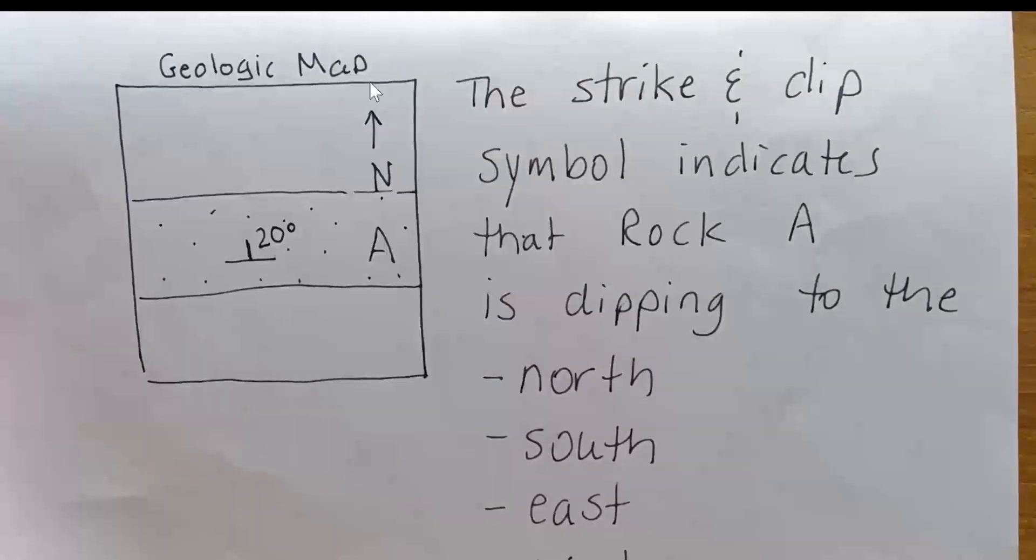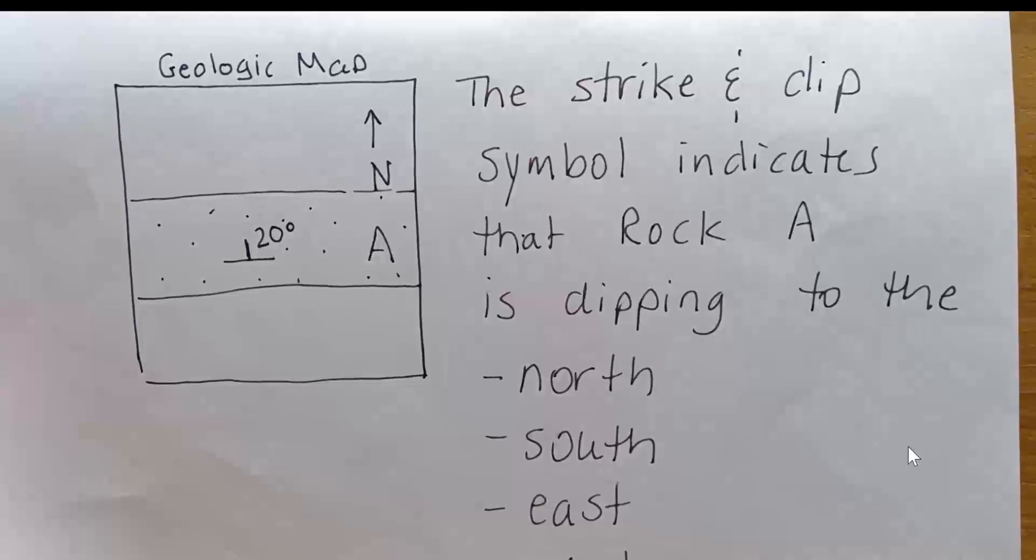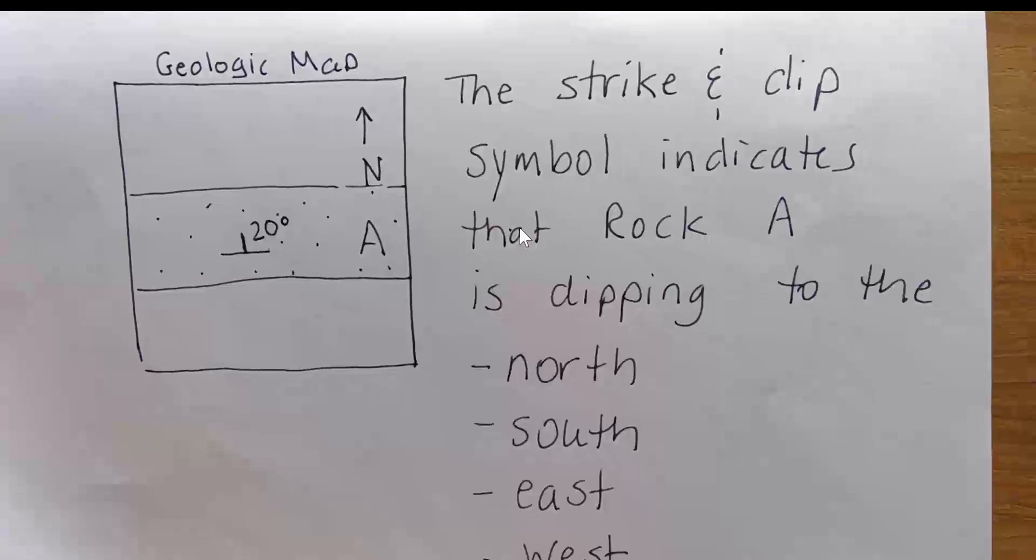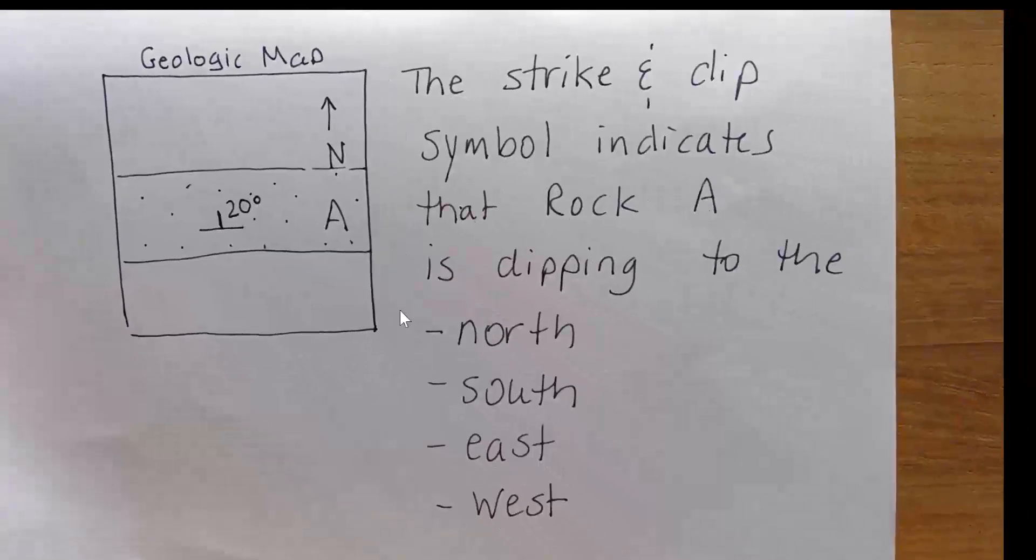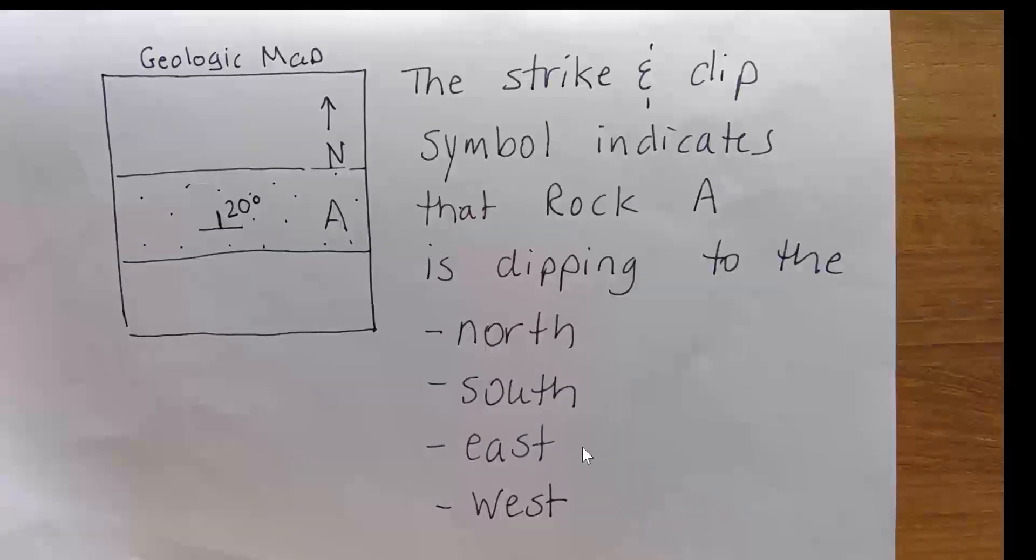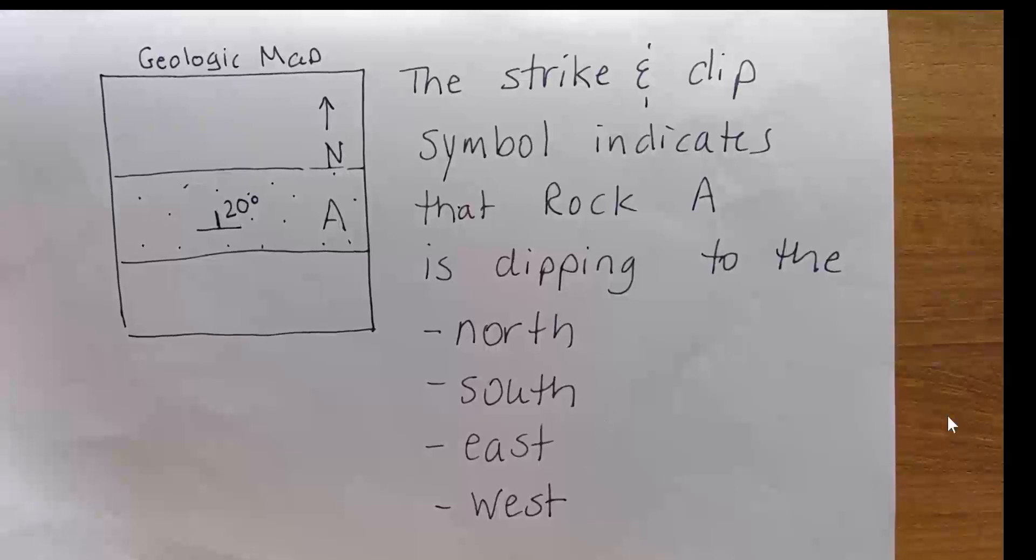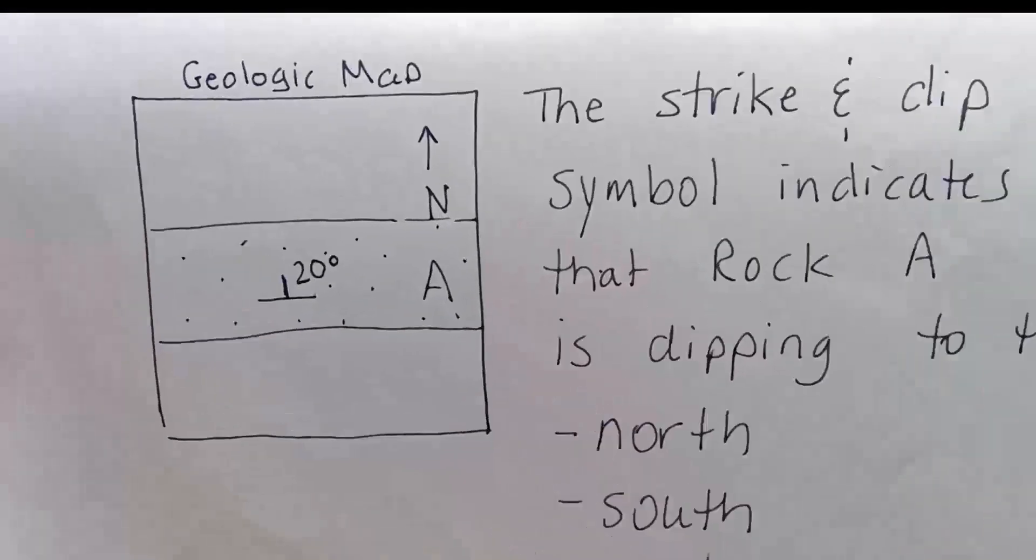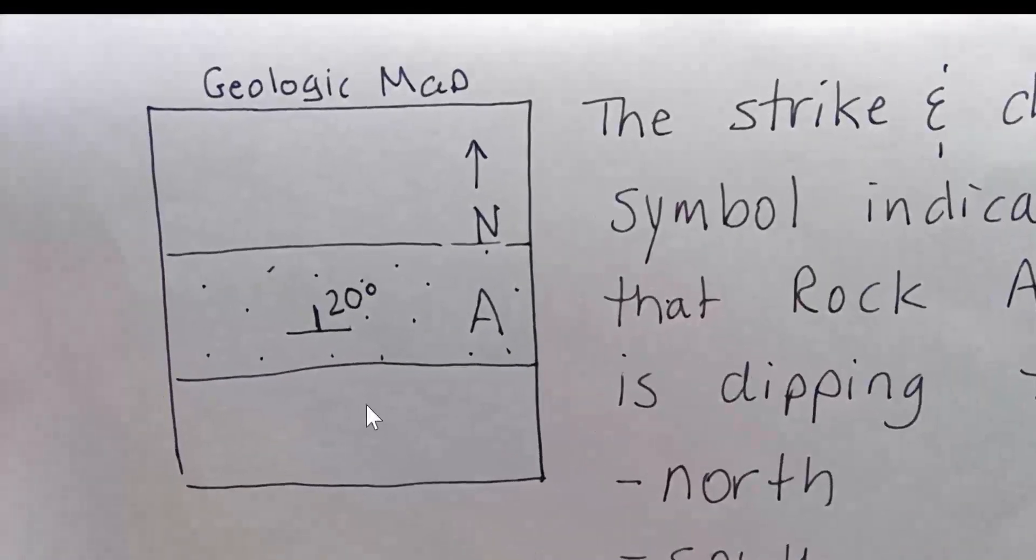North is to the top of the page on this map, like most maps. The question says the strike and dip symbol indicates that rock A is dipping to the north, south, east, or west. When we say what is the dip direction, we're saying what direction would a marble roll if we put a marble on the surface of the rock layer, in this case rock layer A.